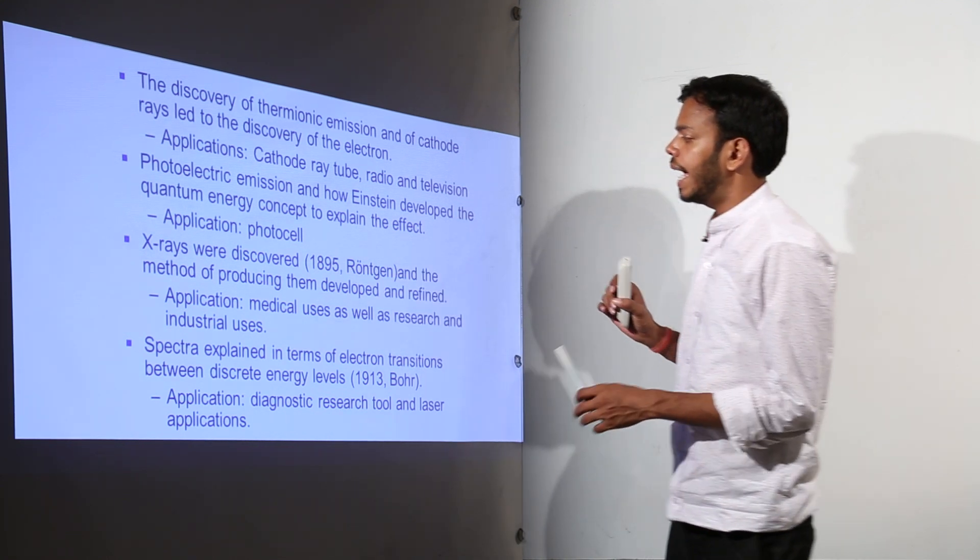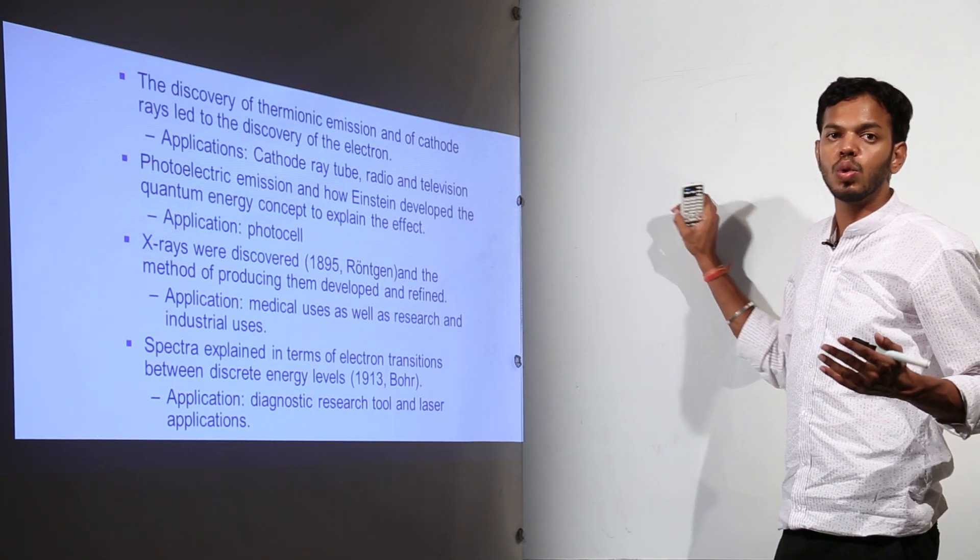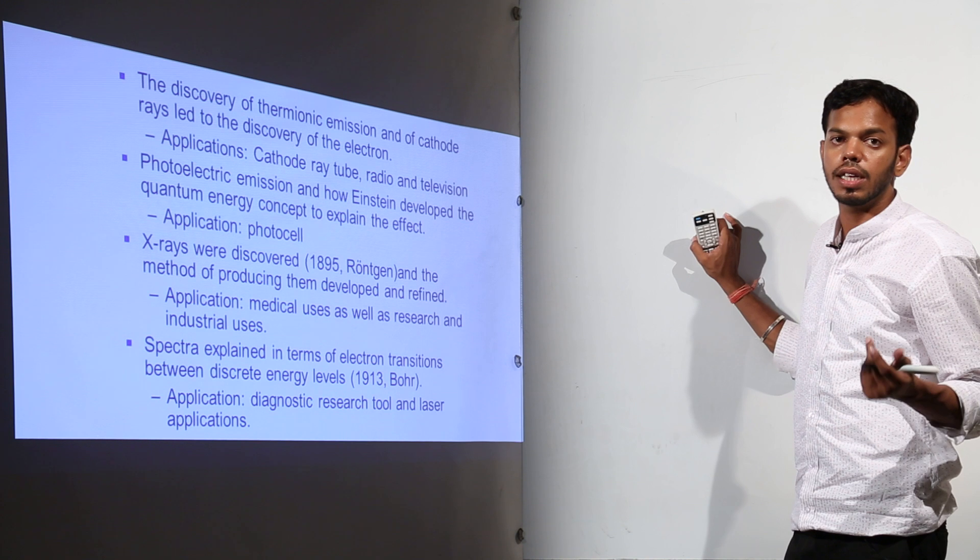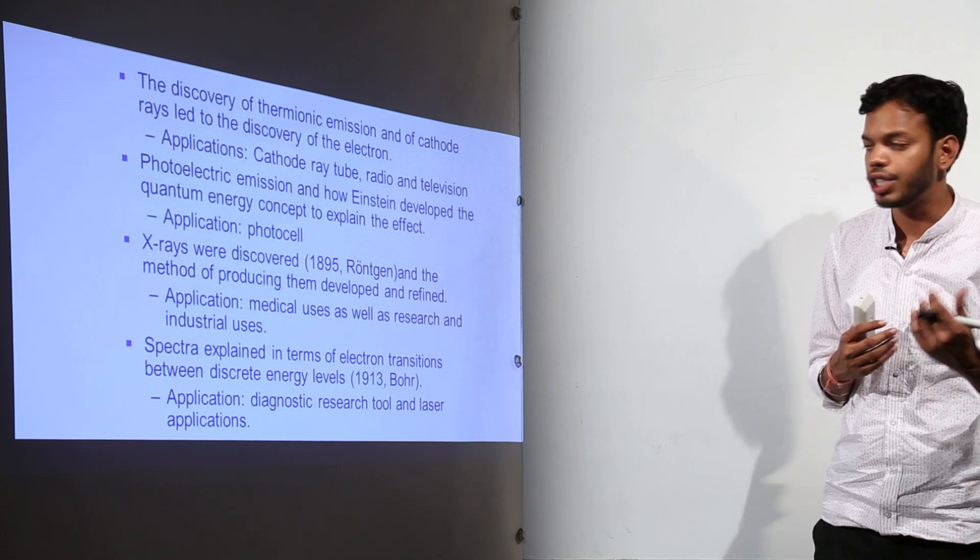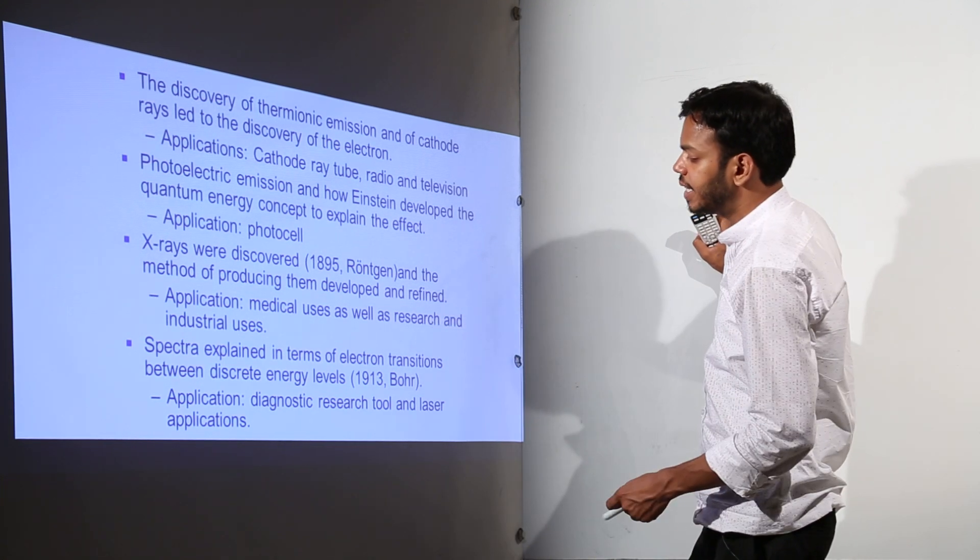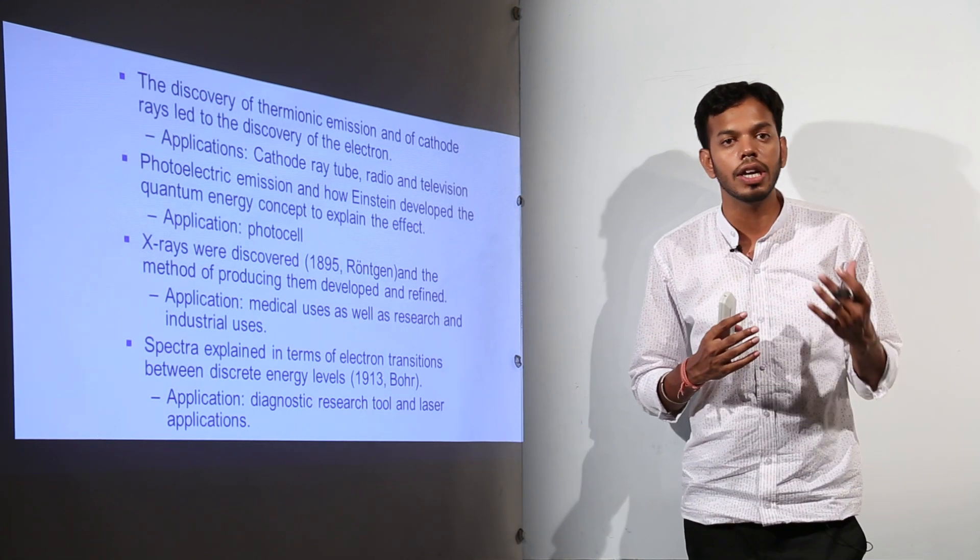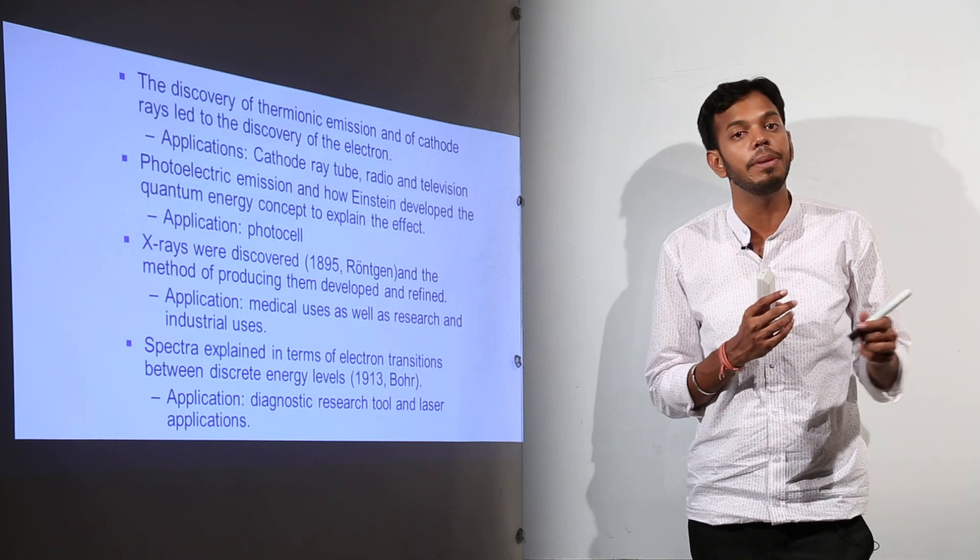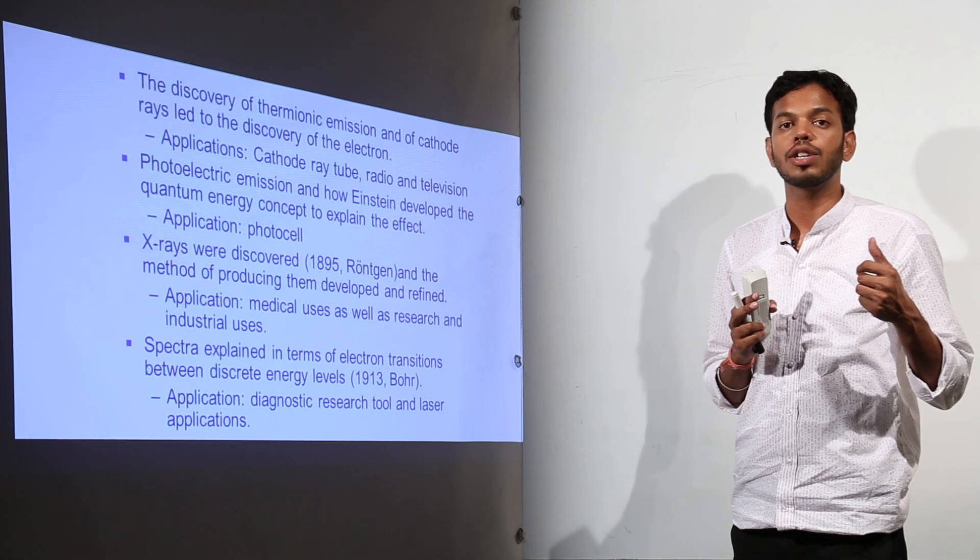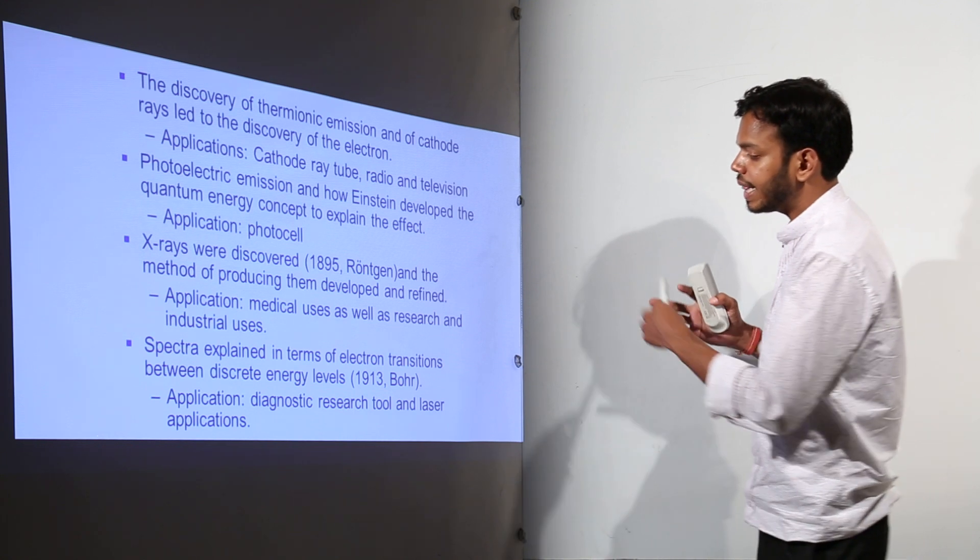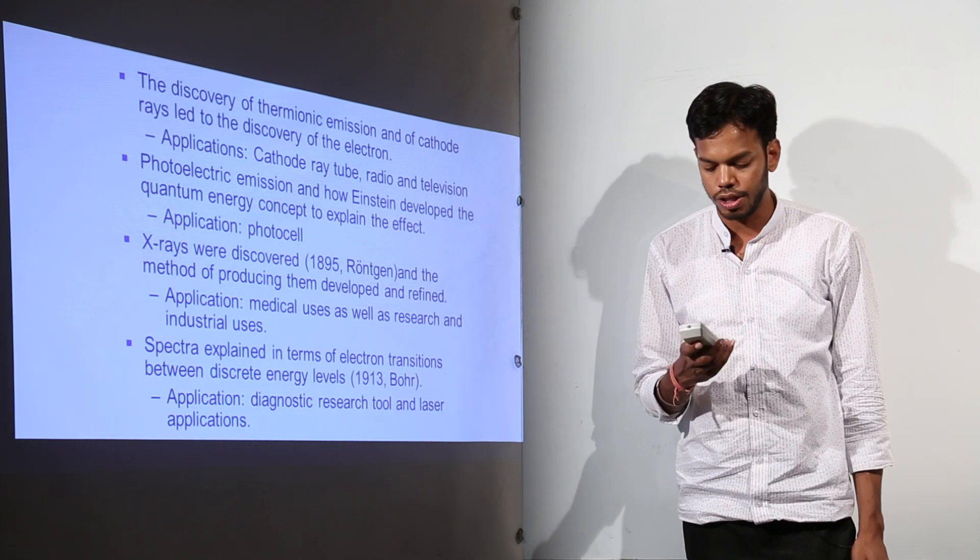X-rays were discovered. What would be the use of x-ray? It was used in medical uses. We know how x-rays are used to diagnose any fracture or rupture in the bones because x-rays can easily pass through muscle tissues but they cannot pass through tough bone tissues. Then, spectra explained in terms of electron transition between discrete energy levels. This was also on the same thing because we were talking about electron emission from various different levels, not just the outermost level, sometimes even from the inner level. The various electrons were showing various forms of energy variations and that led us to the development of diagnostic research tool and laser applications.